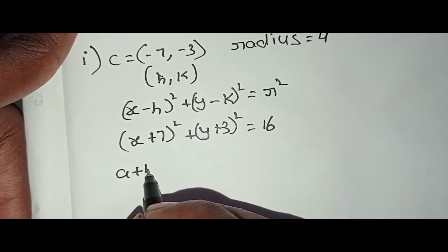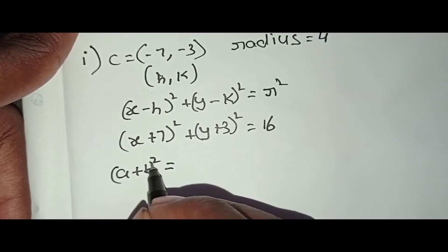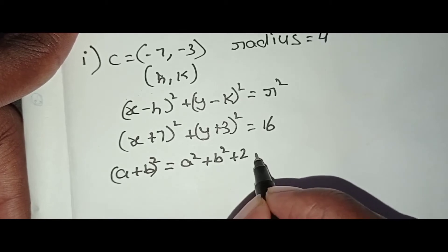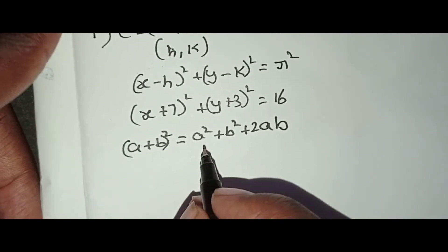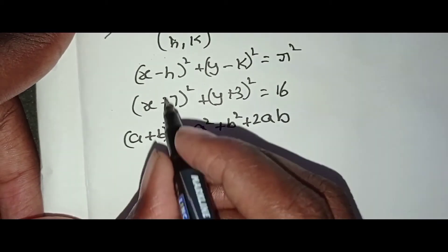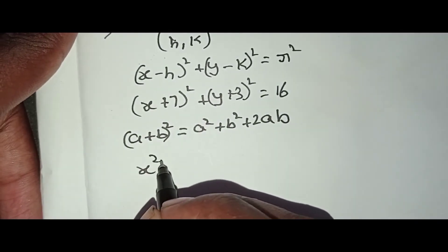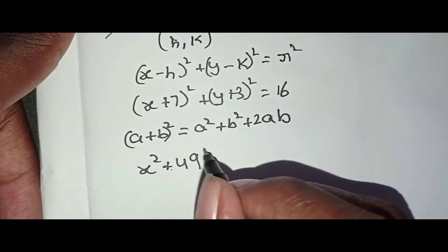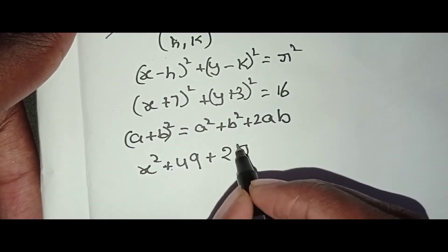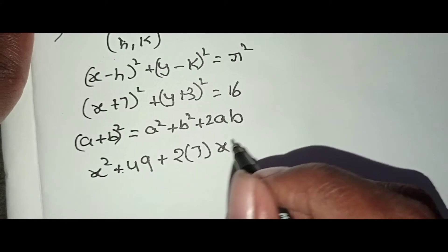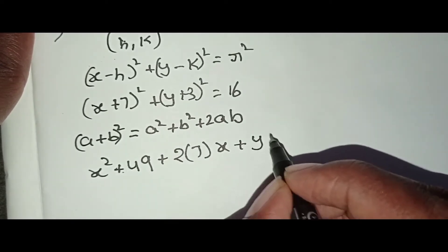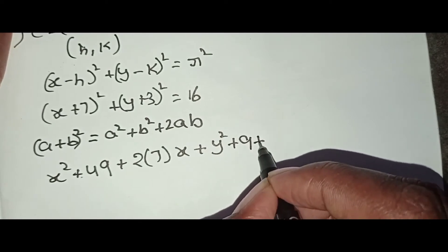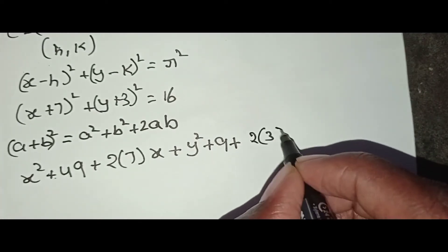Using the (a + b)² formula: a² + 2ab + b². Expanding (x + 7)²: x² + 49 + 14x. Expanding (y + 3)²: y² + 9 + 6y.